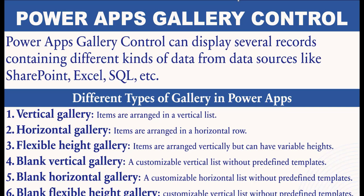Suppose you want to browse some product names like laptop or keyboard, or browse prices of any product — you can scroll and get your item. Some use cases include displaying a list of records like products, employees, or task details, or creating image galleries or catalogs. There are six different types of galleries in PowerApps.